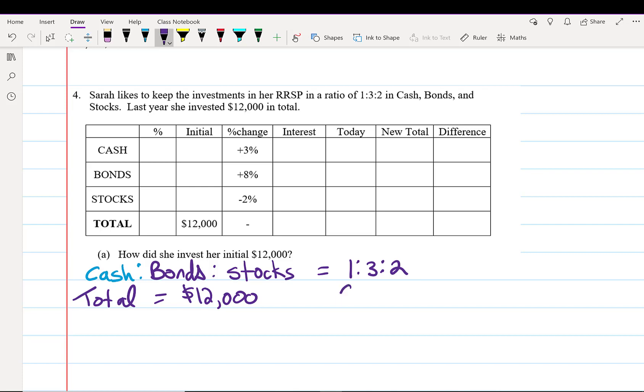That means our total of $12,000 is going to be in six parts (1 plus 3 plus 2). We add those together to get the total number of parts.